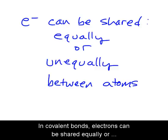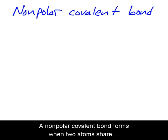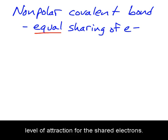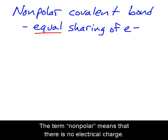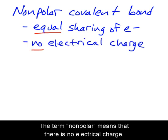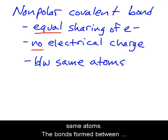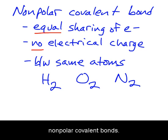In covalent bonds, electrons can be shared equally or unequally between two atoms. A nonpolar covalent bond forms when two atoms share electrons equally — both atoms have the same level of attraction for the shared electrons. The term nonpolar means there is no electrical charge. Nonpolar covalent bonds often occur between the same atoms; the bonds in hydrogen gas H2, oxygen gas O2, and nitrogen gas N2 are examples of nonpolar covalent bonds.